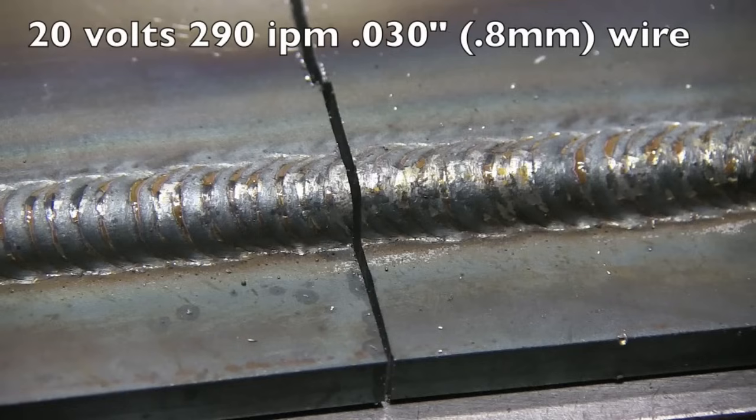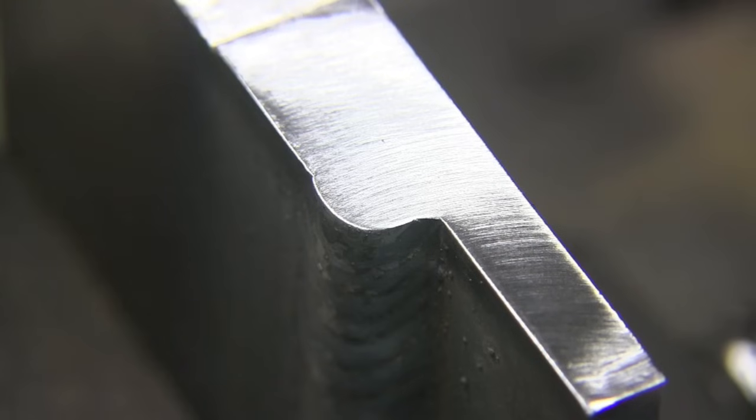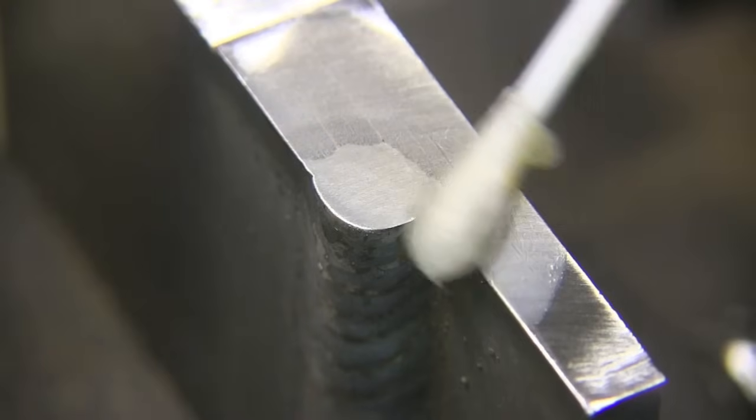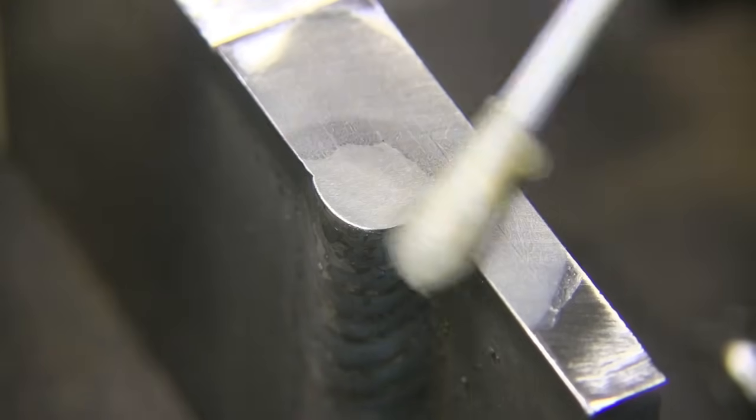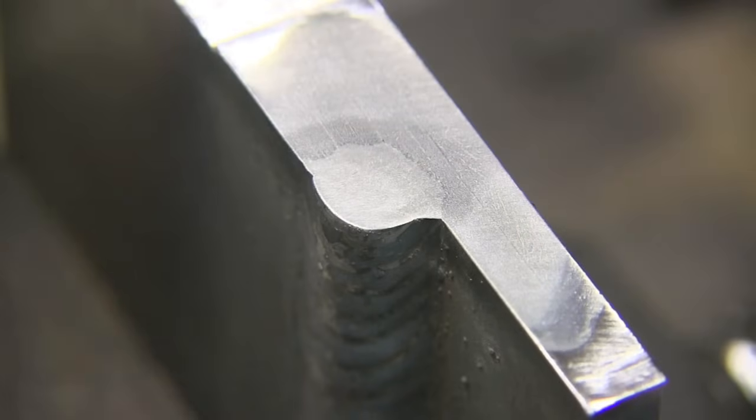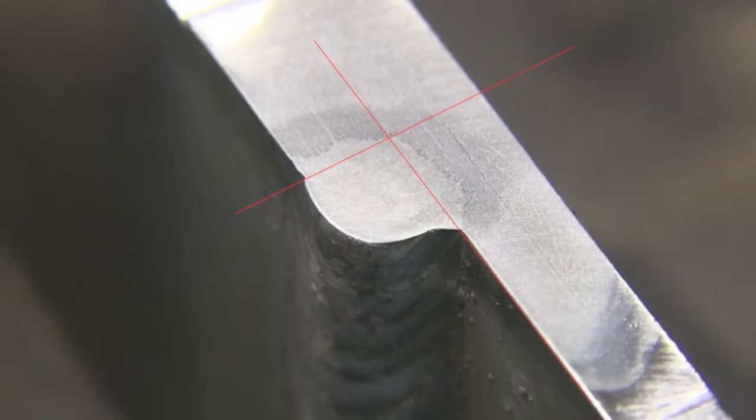I also ran one at 20 volts and 290 inches a minute. It looked like it penetrated a little bit better into the root but also got a little bit more convexity. That is kind of the balance that you're trying to achieve welding uphill: have it hot enough to get penetration into the root but not so hot that you can't control the molten metal and keep it from sagging and building up too much.